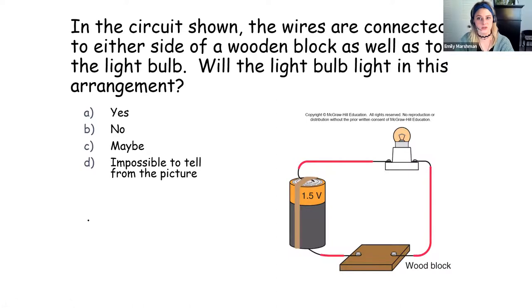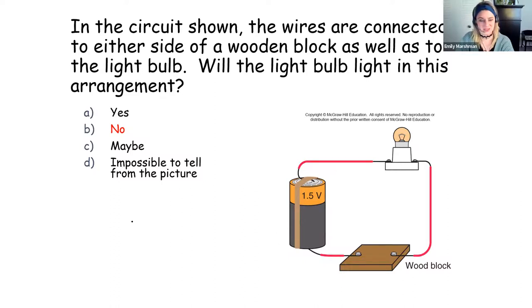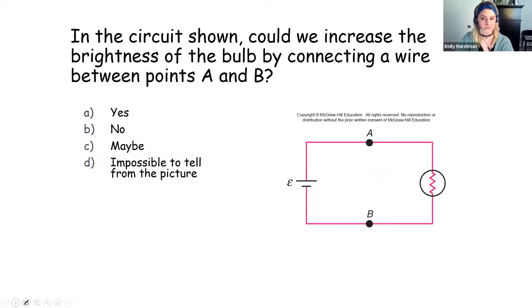Concept question: in the circuit shown, wires are connected to either side of a wooden block as well as a light bulb. Will the light bulb light up? The correct answer is no. The wooden block has such high resistance that it prevents current from flowing — the battery does not provide enough energy to overcome the wood block's resistance, so the light bulb will not light up, even though we have a closed circuit.